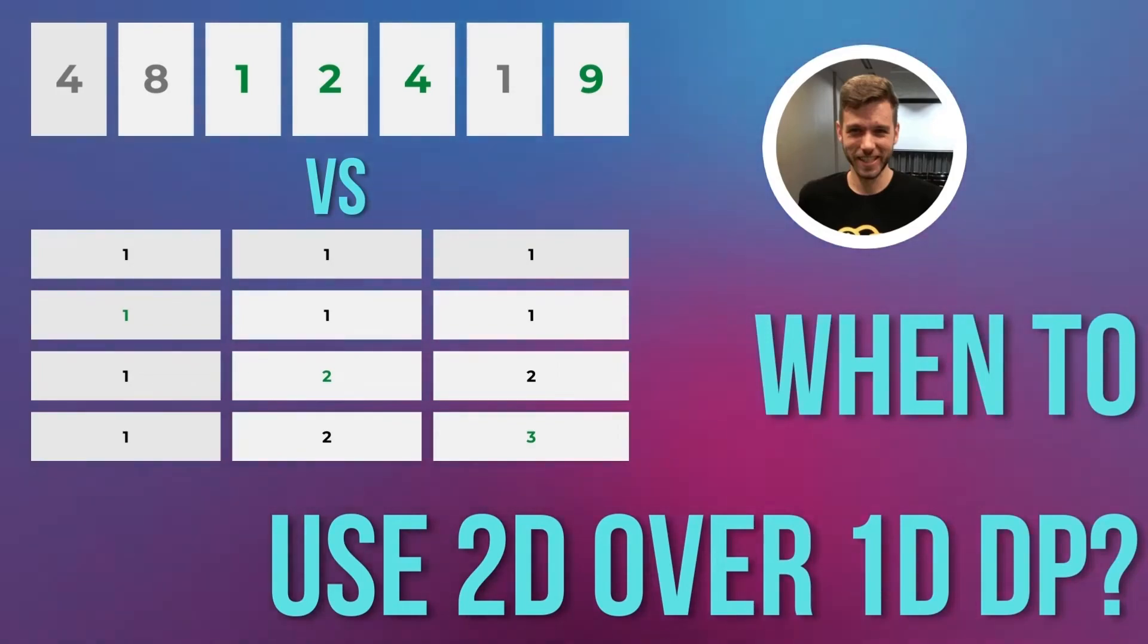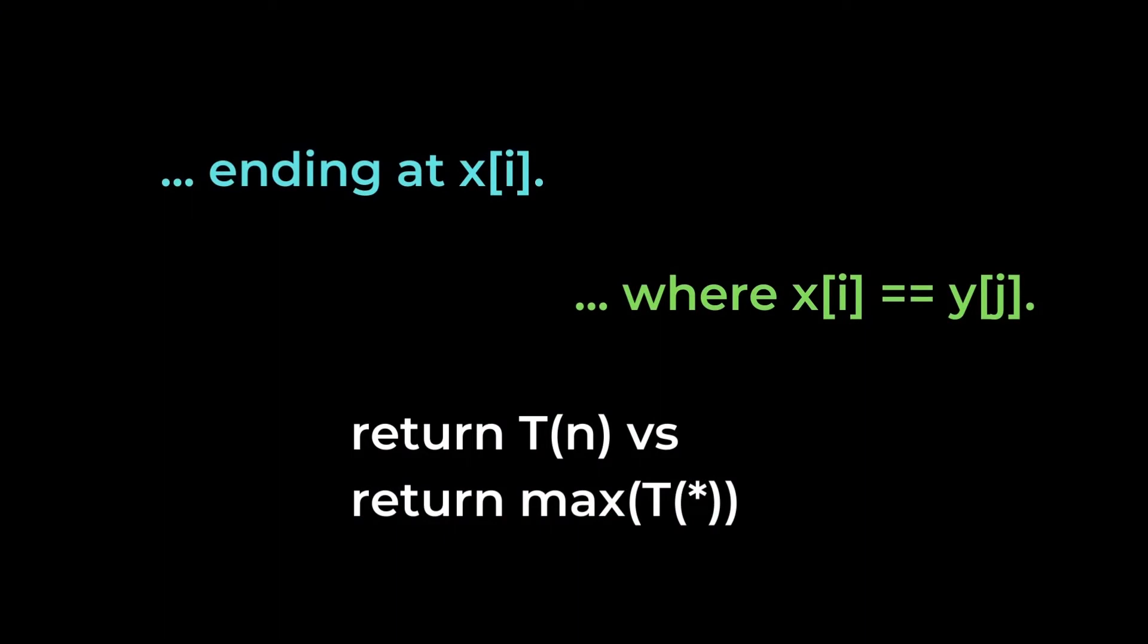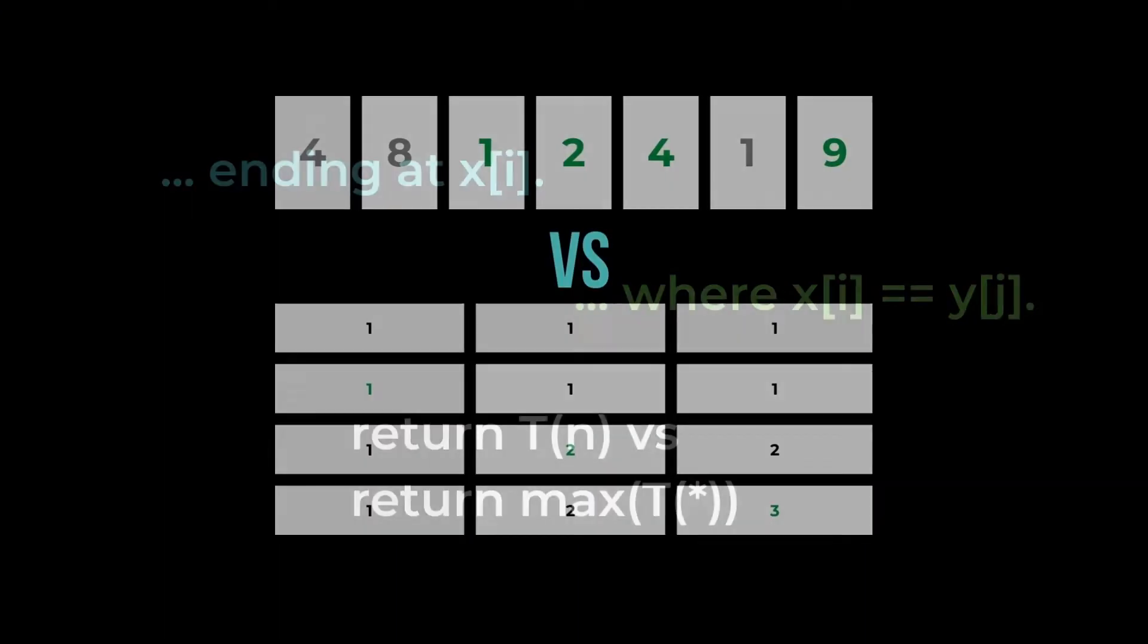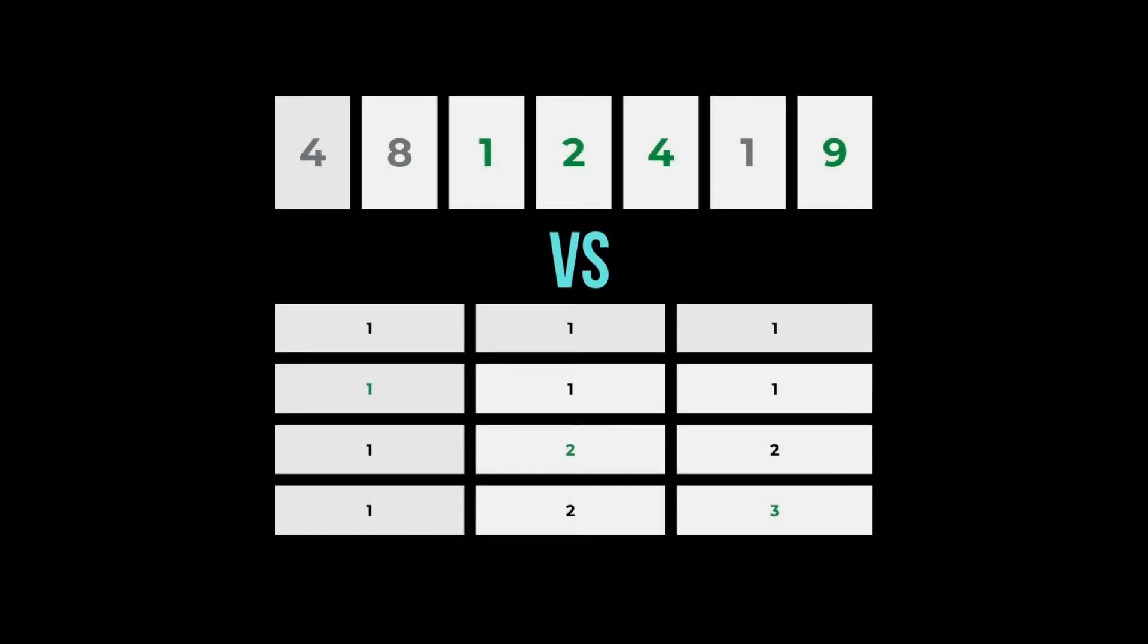In the last video we looked at when you need to apply constraints like ending at x high with dynamic programming problems. In this video we're similarly going to look at when you need to use 2D tables over 1D tables.